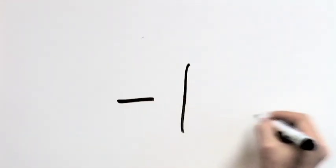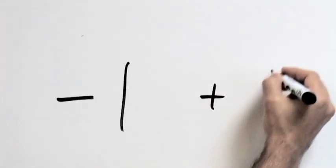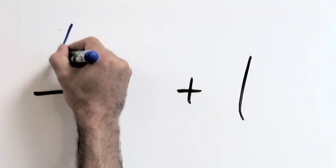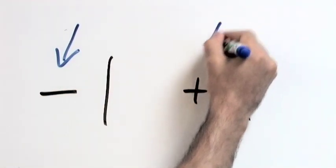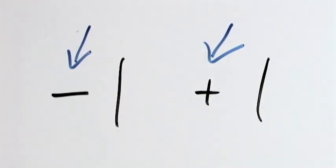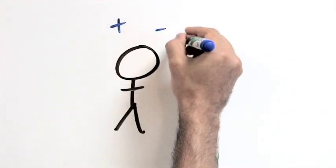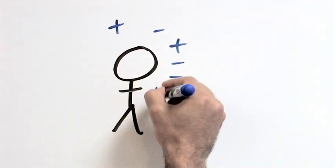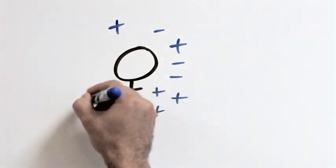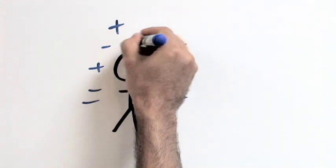Again, like in math, look for the signs. The sign before a number determines its value, if it's a plus or a minus. You must look for the signs in the person's character that determine his or her value.